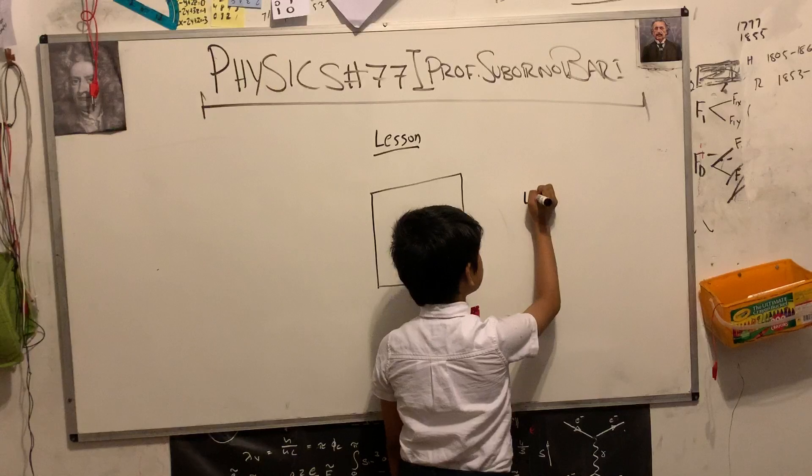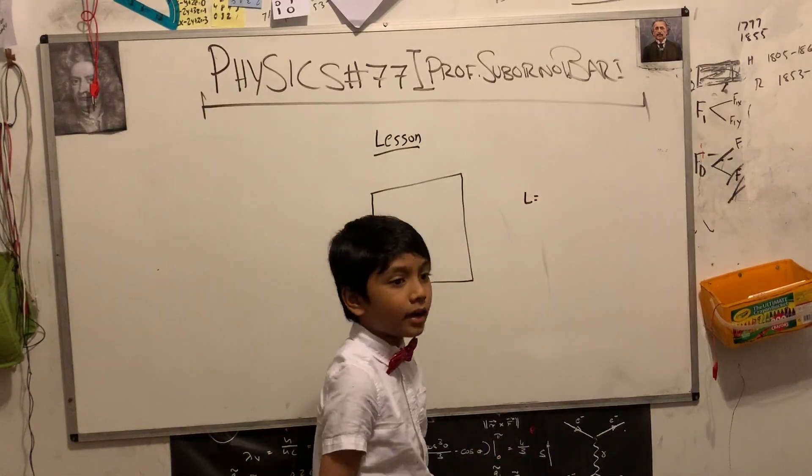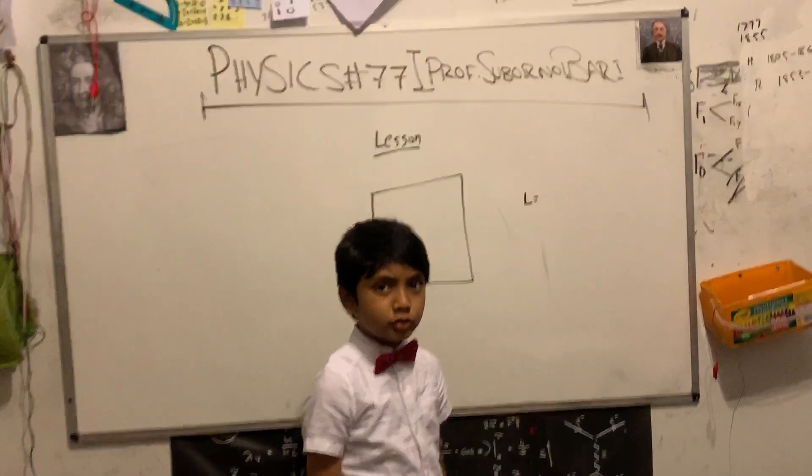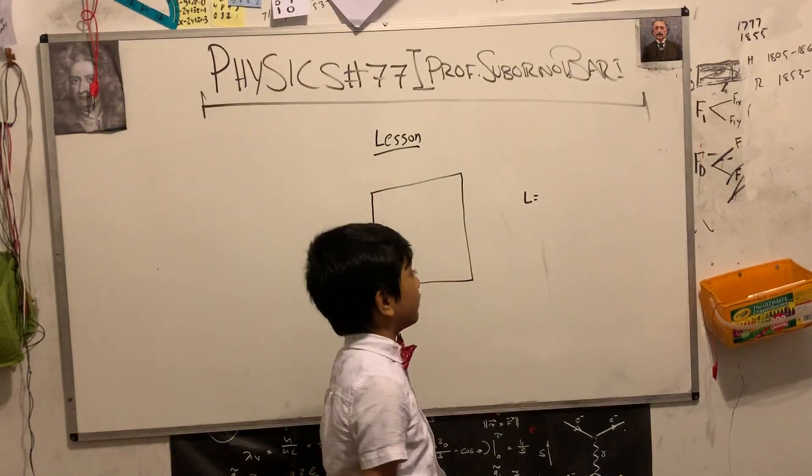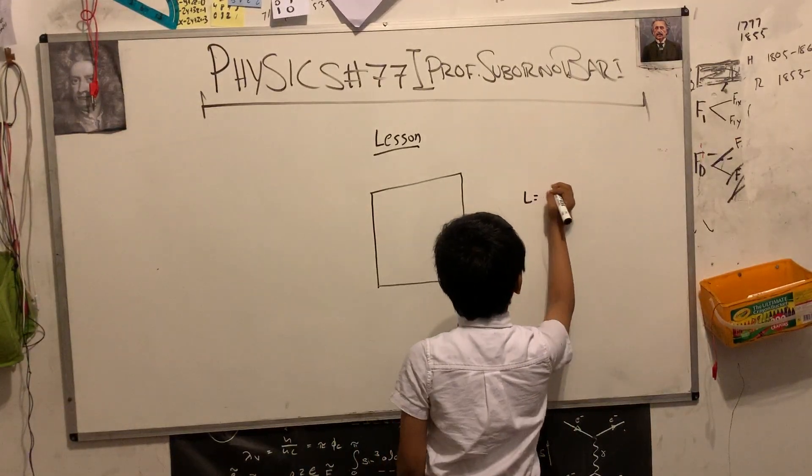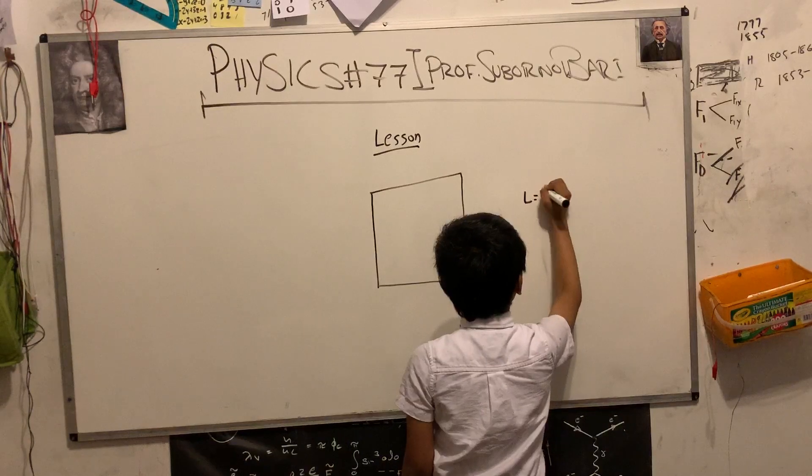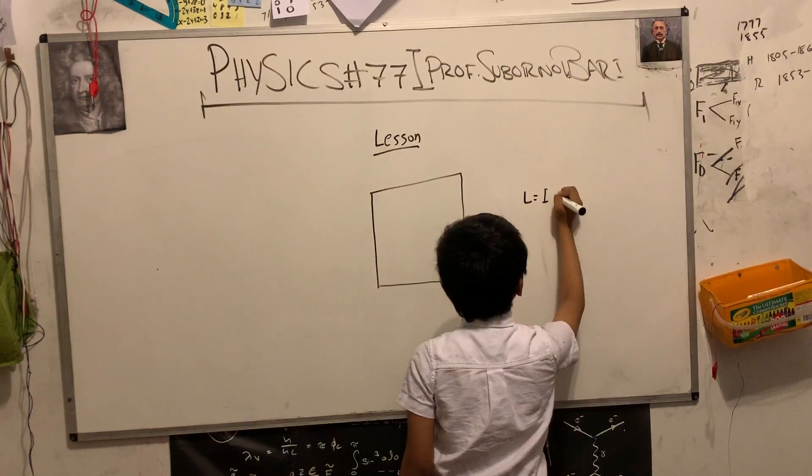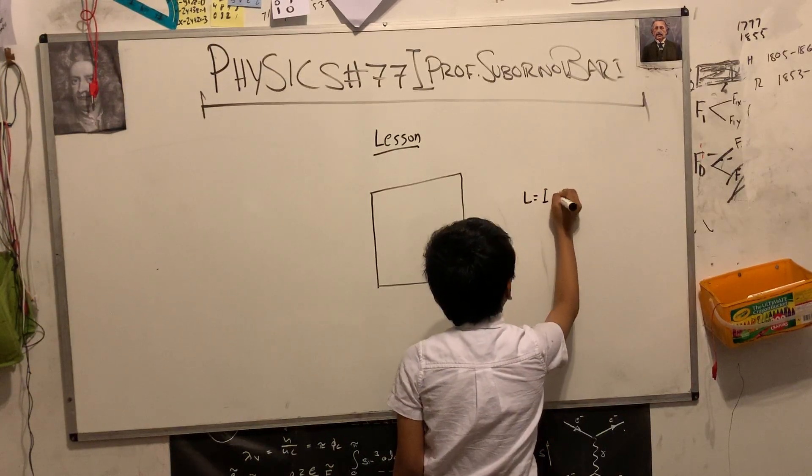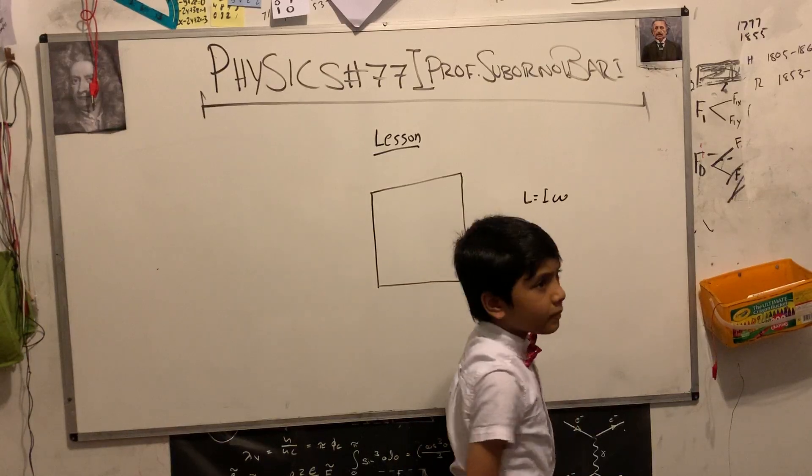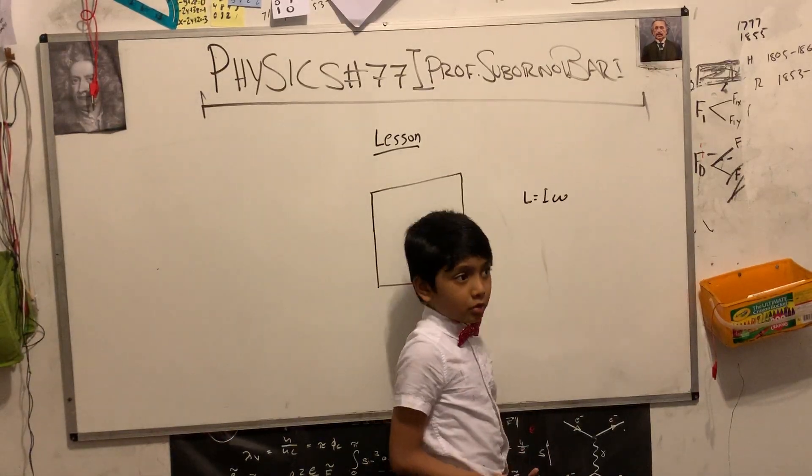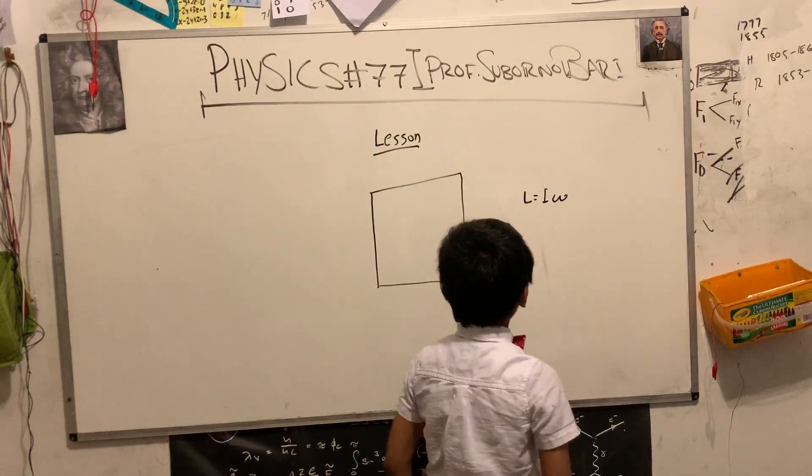First of all, angular momentum is what we will probably get to soon. This will probably be useful later on. Angular momentum is going to be I... I'm predicting it's I omega. Because I know that regular momentum is mv.